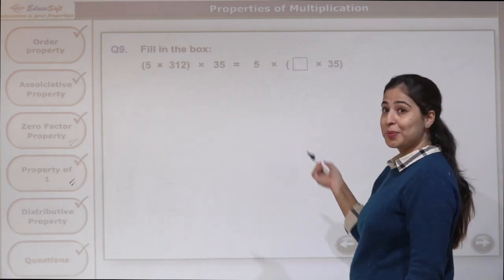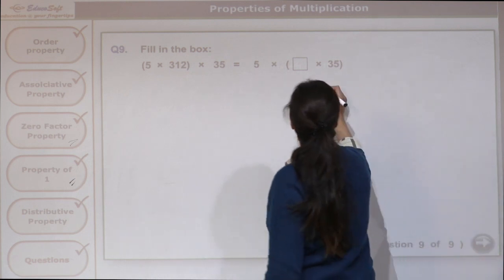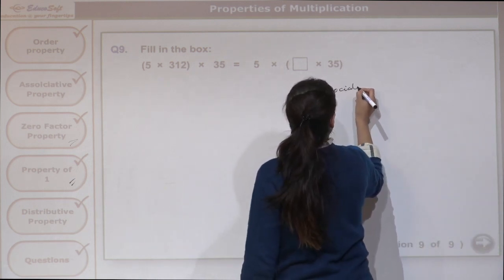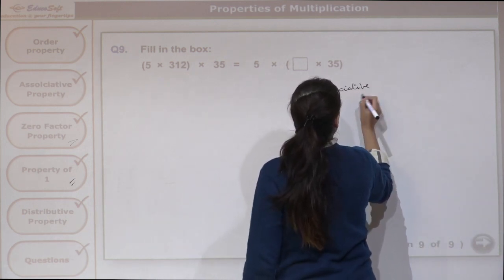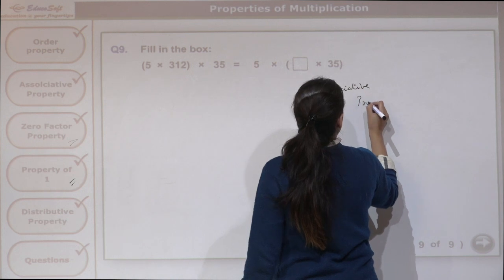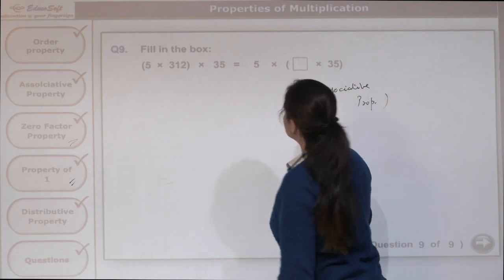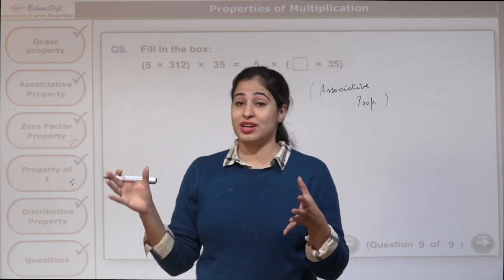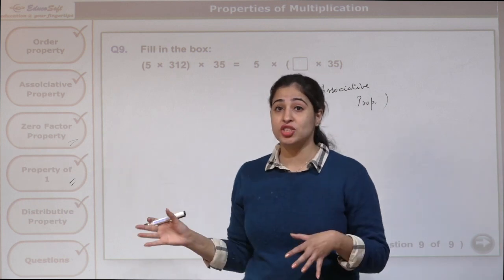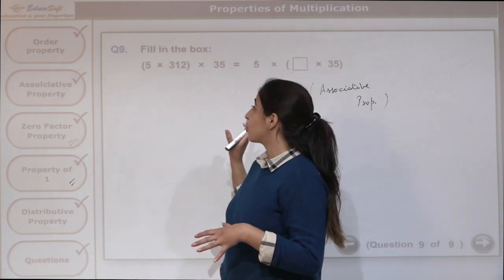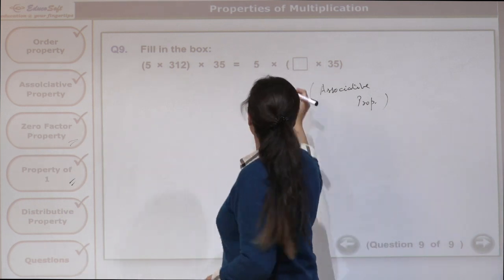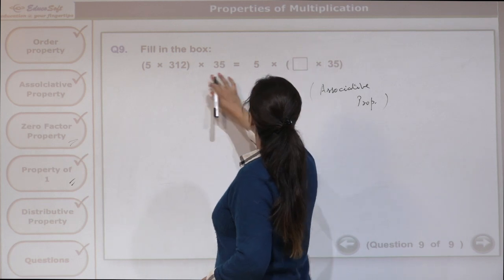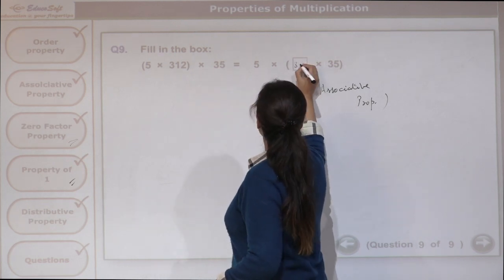Yes, this is our associative property, which says that if the grouping of the factors is changed, the product does not change. So we have 312 here.